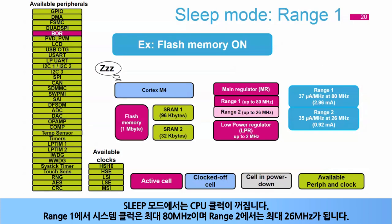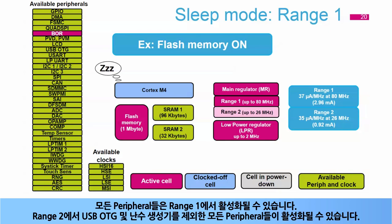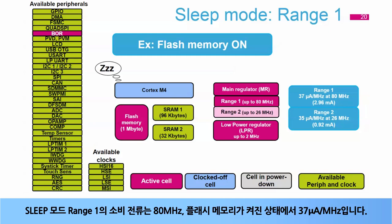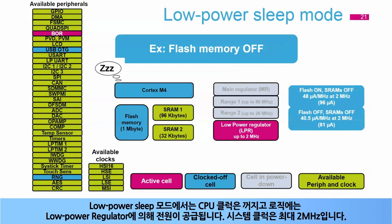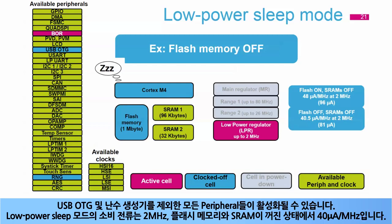In sleep mode, the CPU clocks are off. In range 1, the system clock is up to 80 MHz; in range 2, up to 26 MHz. By default, SRAM 1 and SRAM 2 clocks are enabled and can be gated off during sleep mode by software. All peripherals can be activated in range 1; in range 2, all except USB OTG and the random number generator. The sleep mode consumption is 37 µA per MHz in range 1 at 80 MHz with flash memory on. In low-power sleep mode, the CPU clocks are off and logic is supplied by the low-power regulator; the system clock is up to 2 MHz. Flash memory and SRAMs can be gated off. The low-power sleep mode consumption is 40 µA per MHz at 2 MHz with flash memory and SRAM off.